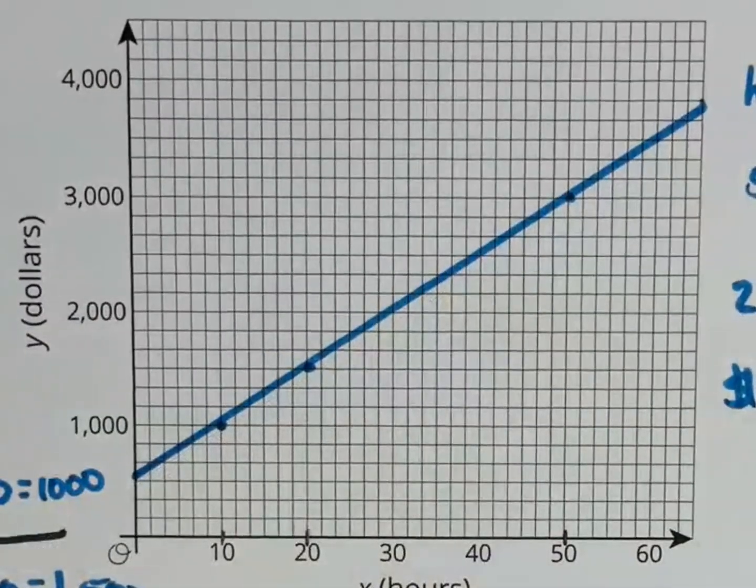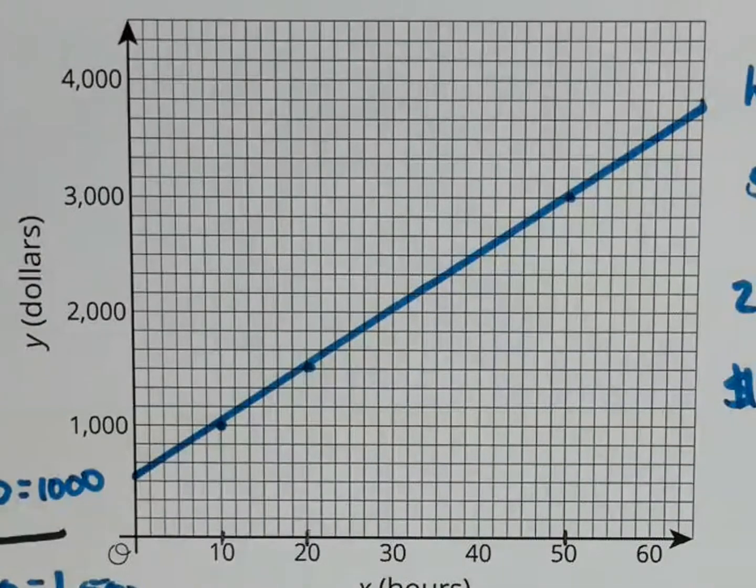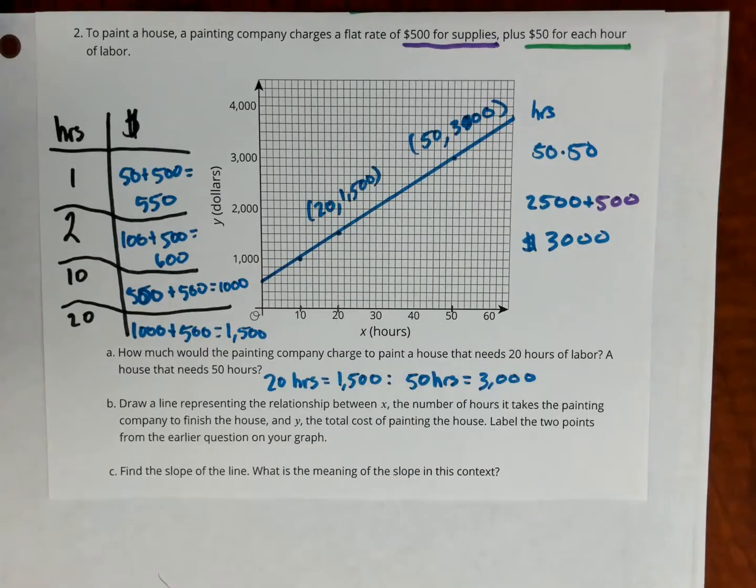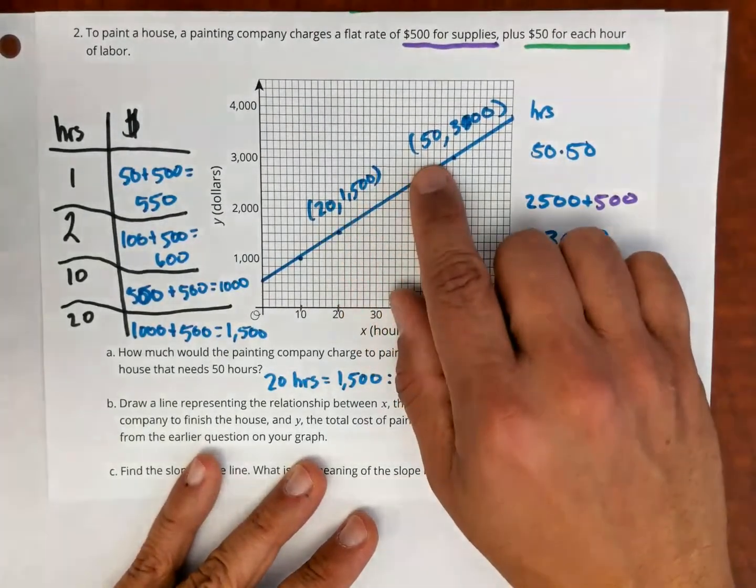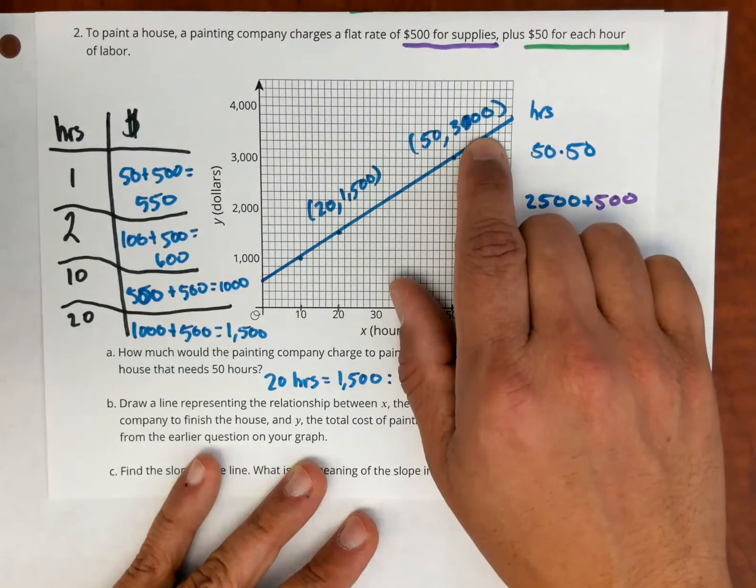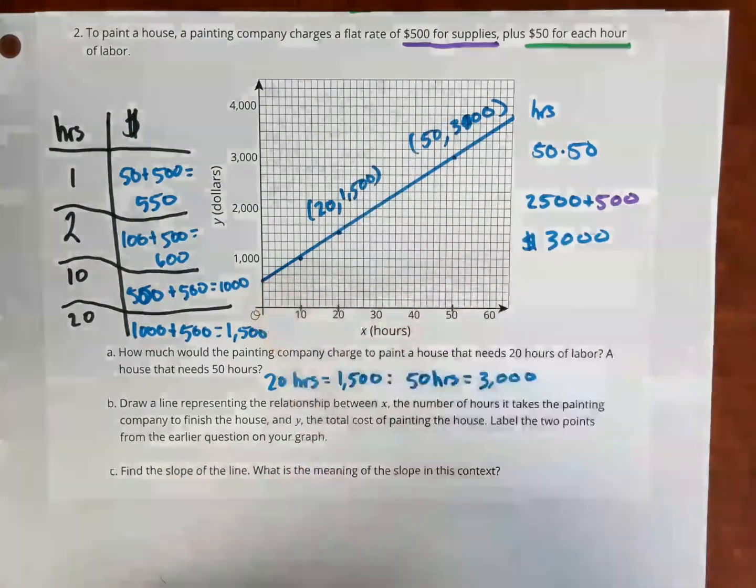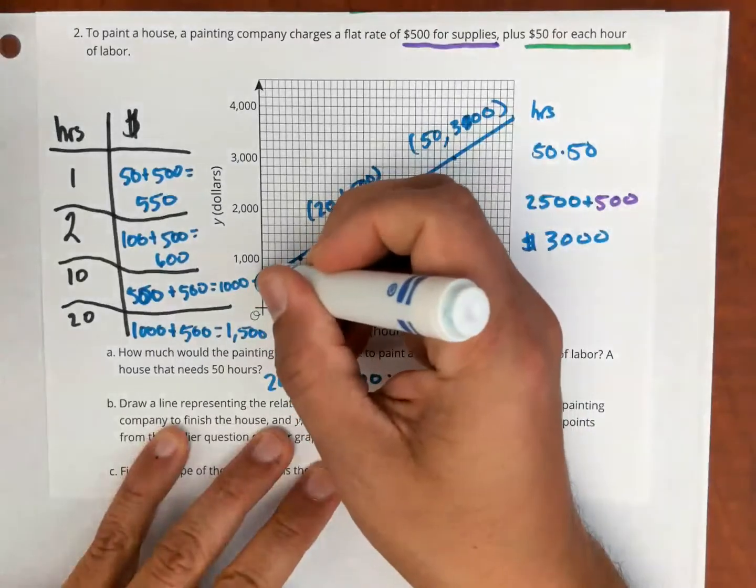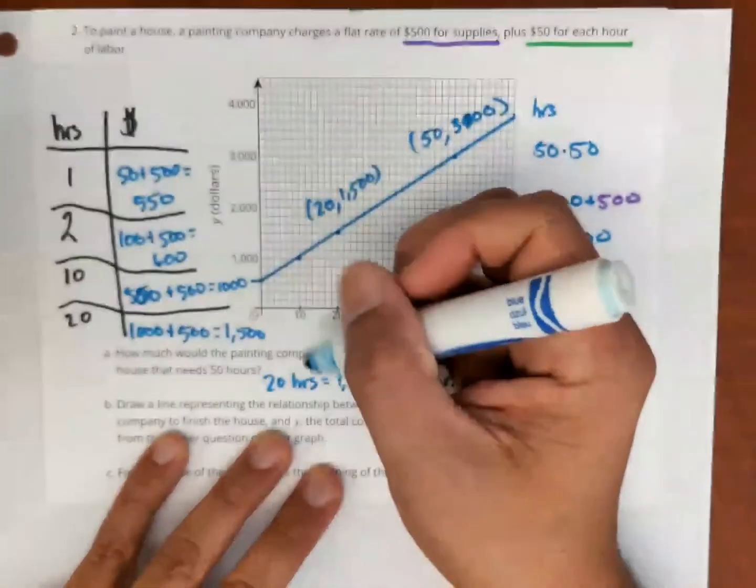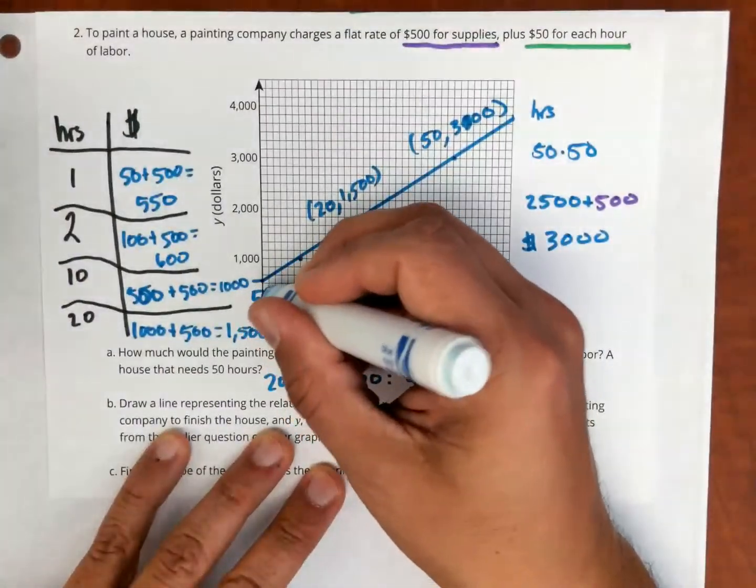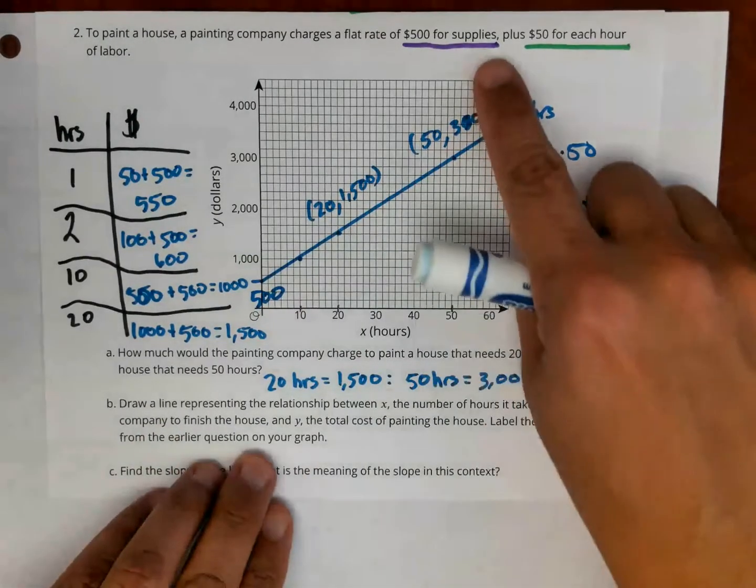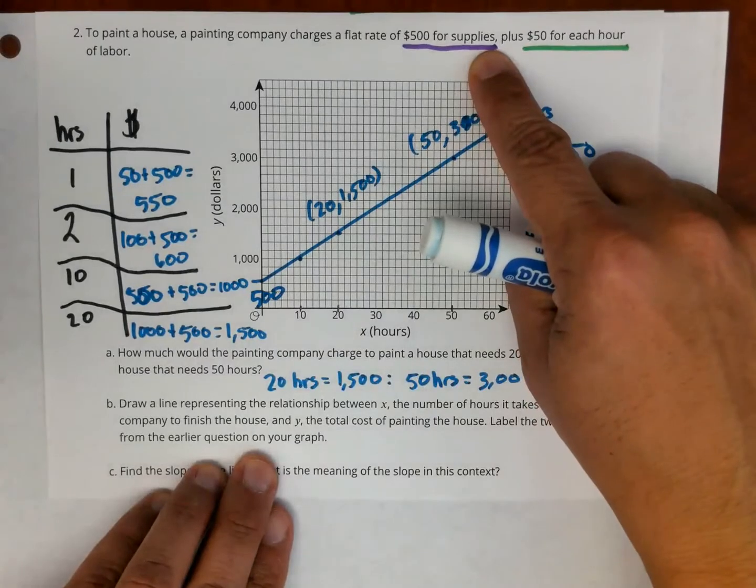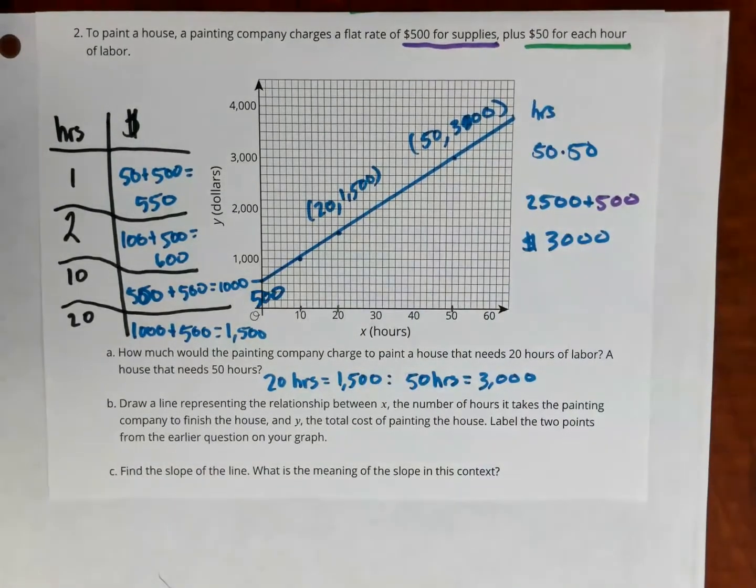Alright, now I have my line there, and I'm going to just quickly label the points that I know, 20 hours and 50 hours. So now I have my points labeled, 20 hours $1,500, 50 hours $3,000, and I want you to see here the starting number. This number here where the graph starts from is 500. Now, where do you see the number 500 in the original problem? It's the $500 for the supplies. Just something there to note.